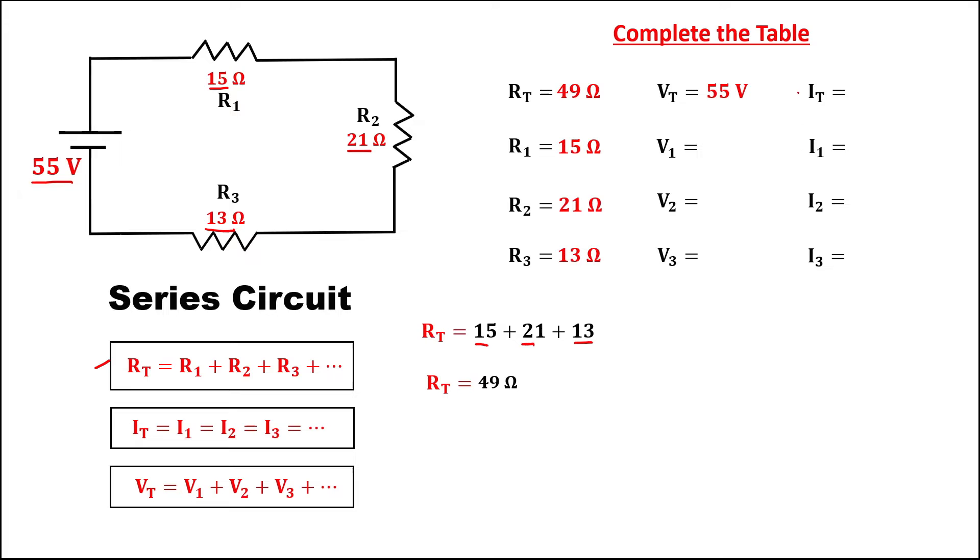Then this time, we can find the total current. The formula to find the current is the voltage over the resistance,